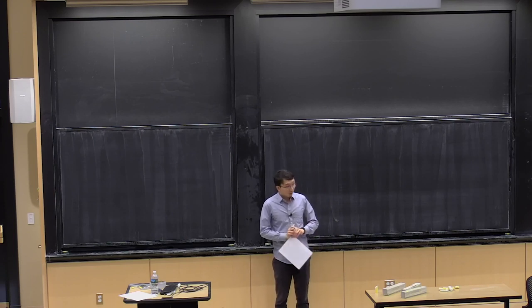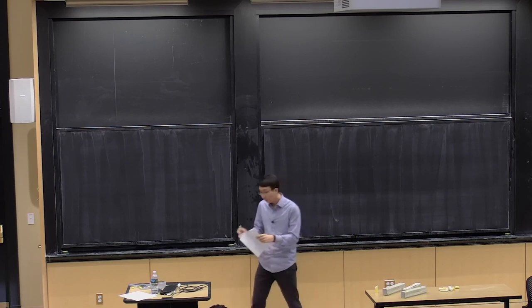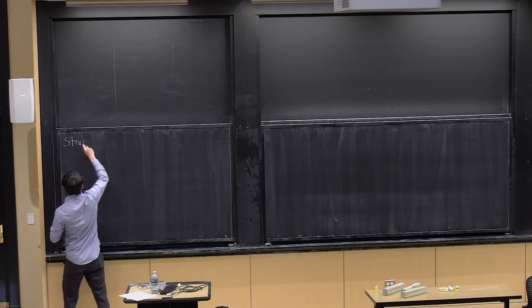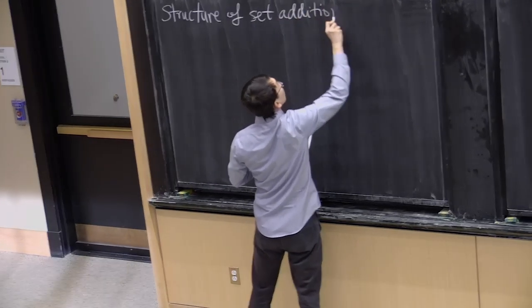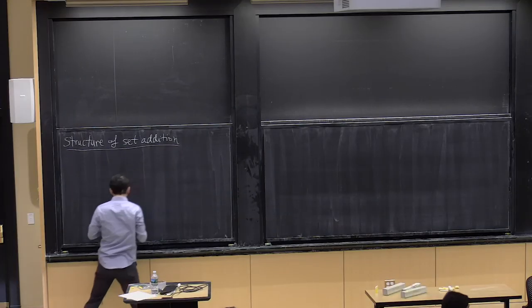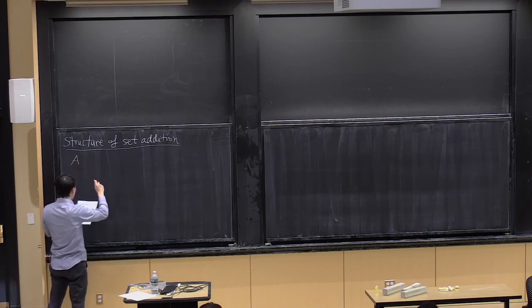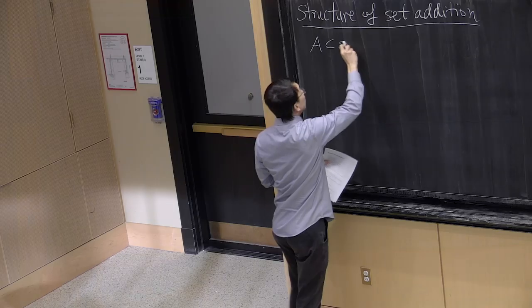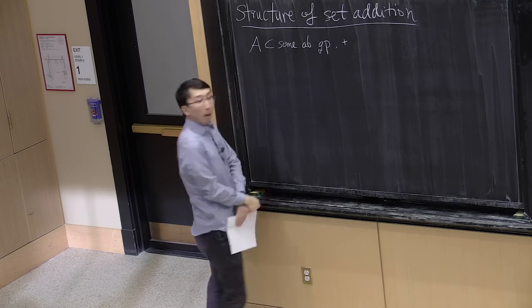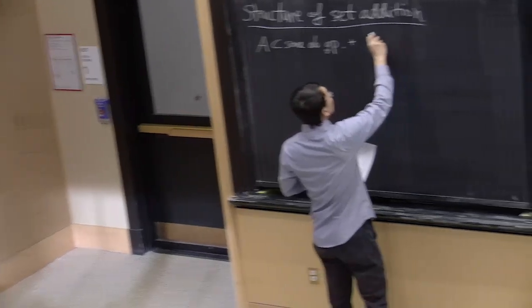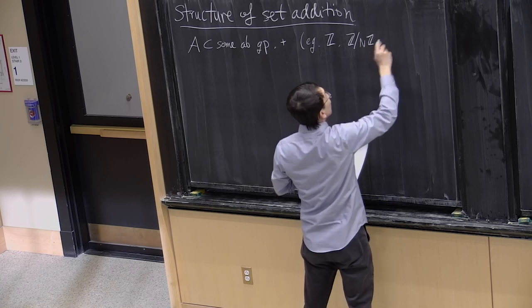Today we're going to start a new topic in additive combinatorics. This is a fairly central topic having to do with the structure of set addition. The main players involve subsets of some abelian group under addition — not necessarily finite. The abelian groups that will come up are generally the integers, Z mod n, or the finite field model.